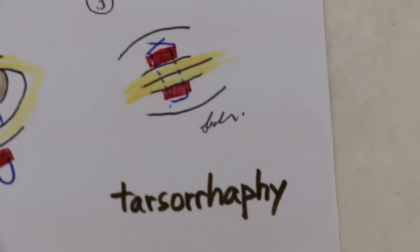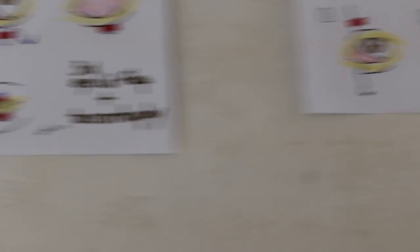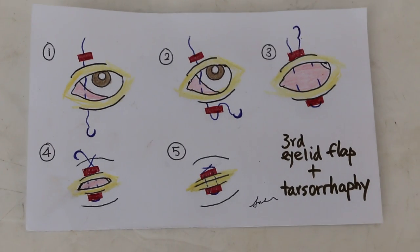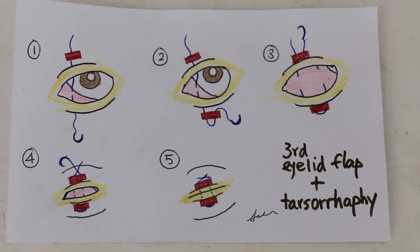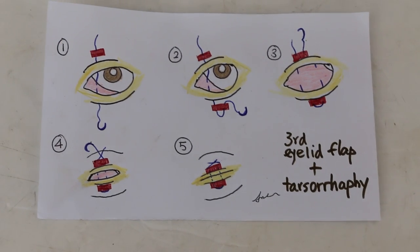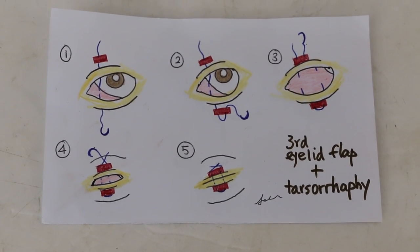Then you close up upper and lower eyelids. So this is tarsorrhaphy. The other one is called third eyelid flap, and the one done on the dog was combined third eyelid flap and tarsorrhaphy, and you see the results 10 days after surgery.